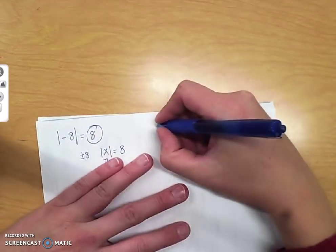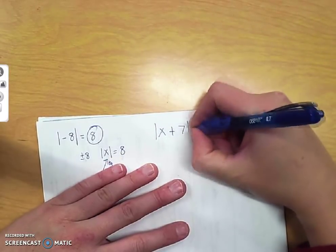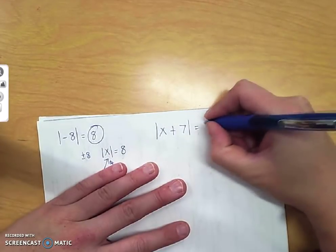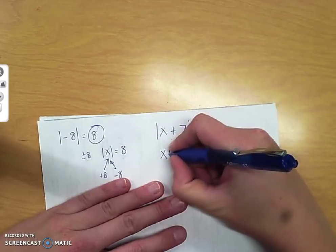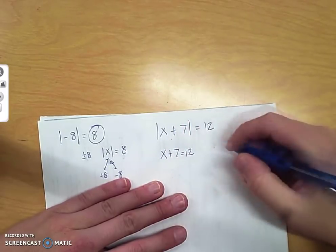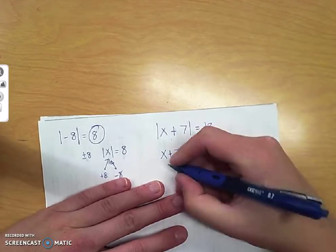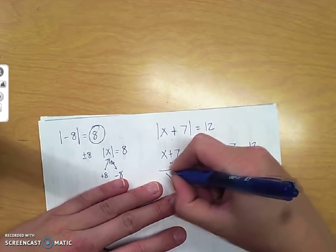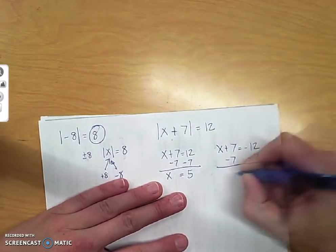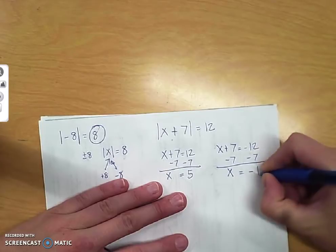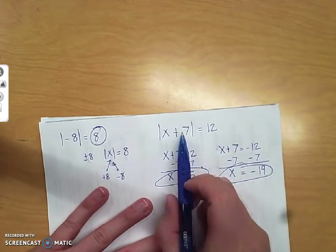Second question. The absolute value of x plus 7 equals 12. So what goes in could be positive or negative. Minus the 7 from both sides. x equals 5. Minus the 7 here. x equals negative 19. Two answers because it's a variable on the inside.